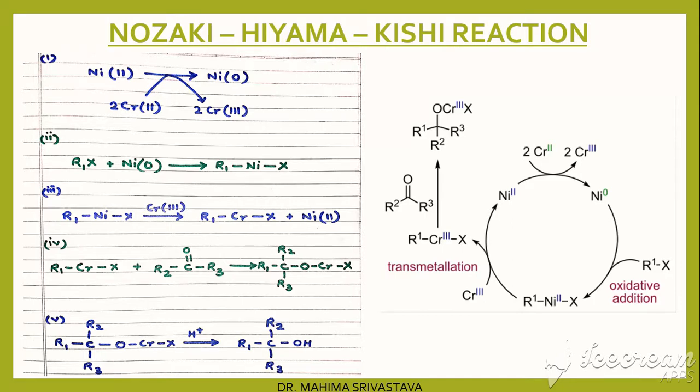Thereby, nickel in 0 oxidation state comes in contact with alkyl halide and insertion takes place. Further, this compound reacts with chromium in oxidation state 3, and now nickel is replaced by chromium.